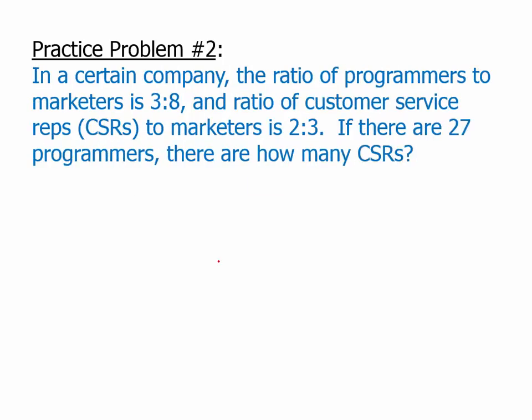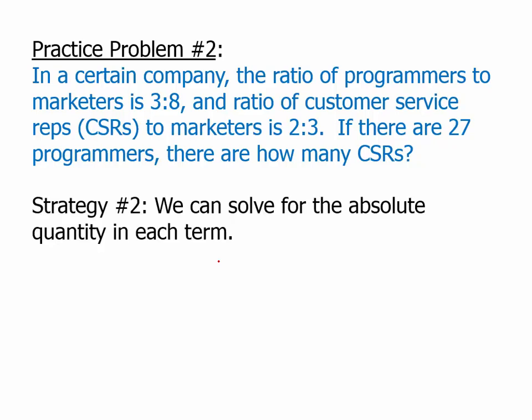Here's problem number two. Pause the video, and then we'll talk about this. Okay, in this one, we're given two different ratios. We have three groups, we're given two different ratios, and we're actually given an absolute count. We're told there are 27 programmers, and we want an absolute count. How many customer service reps? And so, here, because we're given an absolute count, and we want an absolute count, this makes it ideal for solving in terms of the absolute quantities. In other words, the algebraic approach, where we're going to use N.